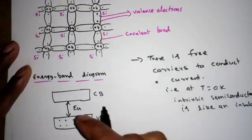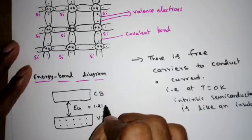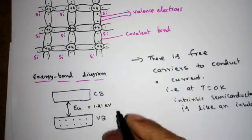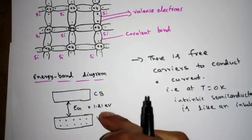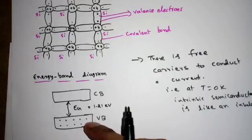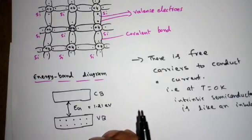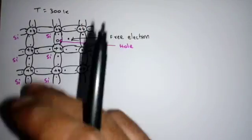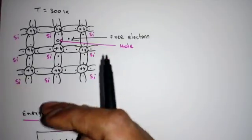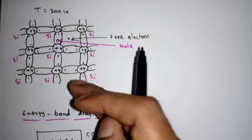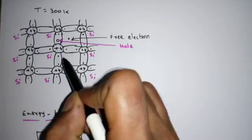If we raise the temperature, for silicon the energy gap is 1.21 eV at T = 0 Kelvin and 1.1 eV at 300 Kelvin. For germanium, we need to give 0.78 eV to move an electron from the valence band to the conduction band. At 300 Kelvin (room temperature), as we slowly increase the temperature, the valence electrons gain thermal energy and break the covalent bond. Here I am showing only one covalent bond breaking.